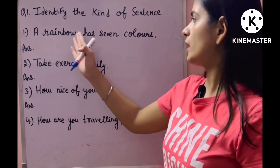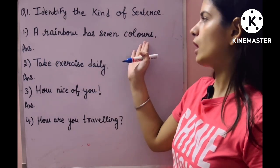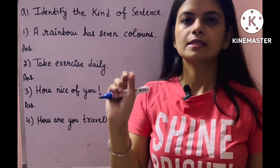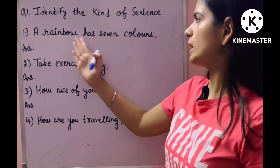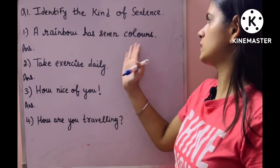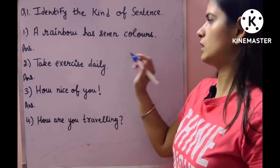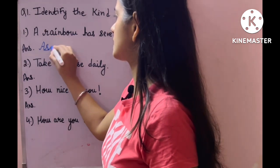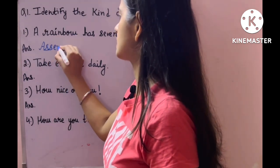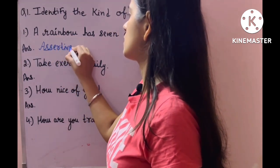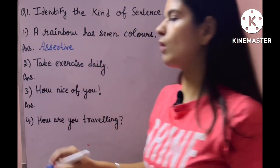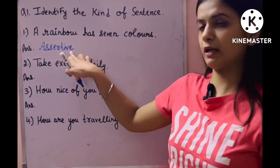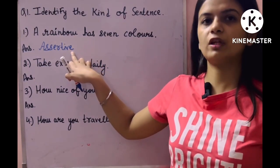First: 'A rainbow has seven colors.' This is a normal statement — simply something is said about how many colors are in a rainbow: seven colors. This sentence is your assertive sentence, which we also call a statement or declarative.